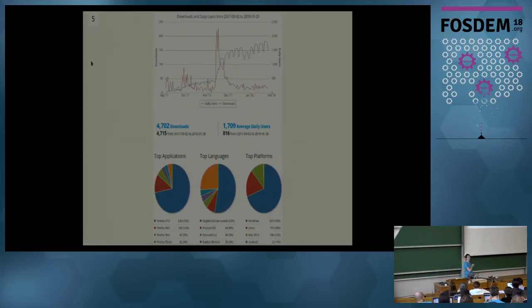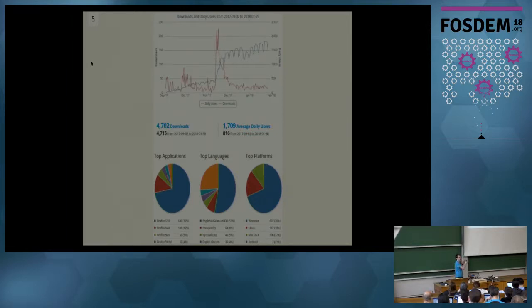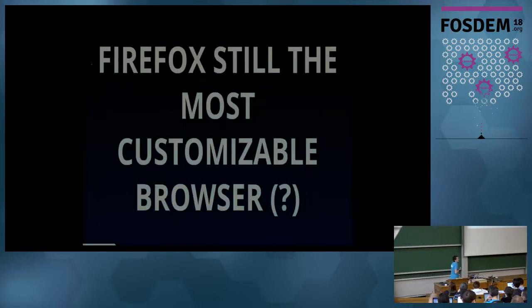In Chrome, this kind of statistics doesn't exist. I won't say that just because I prefer Mozilla — it's simply true, it doesn't exist. Also, the interface of the Chrome marketplace back-end is the most horrible thing you can see on the web right now.